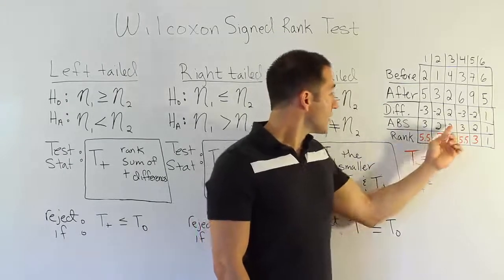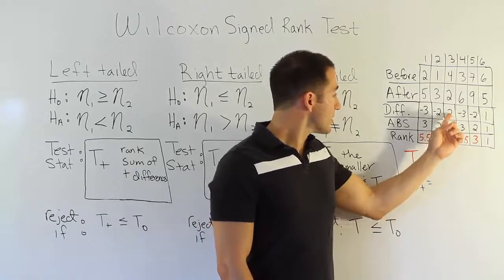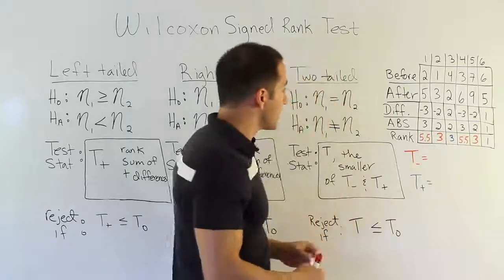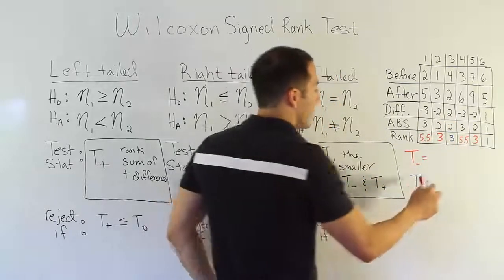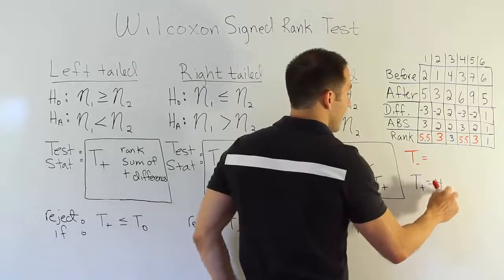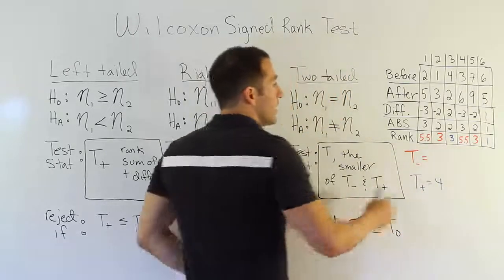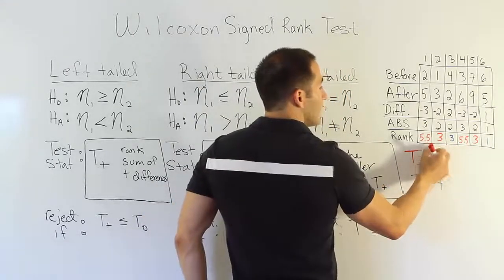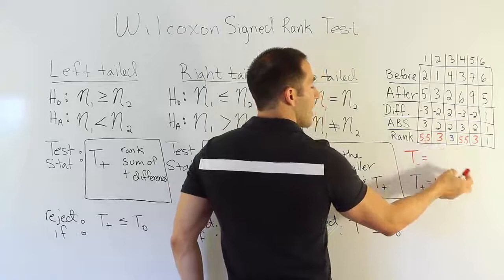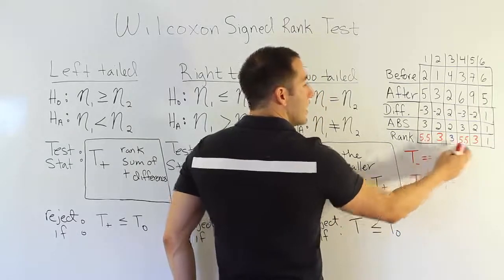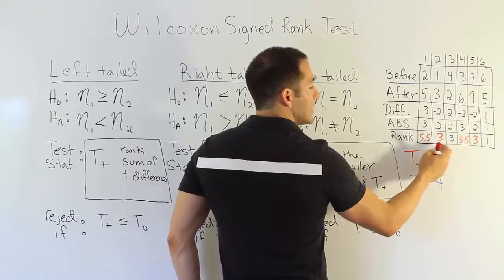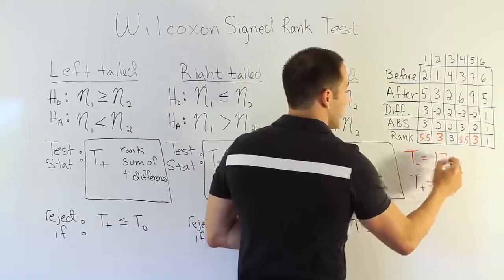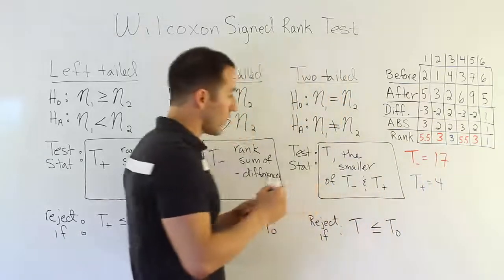I do the same thing for the 3s, which are also tied. They would have gotten ranks 5 and 6, so I gave each one 5.5. Because this 2 was originally a positive, I put it under the blue — the positive total is only 4. The other total: 5.5 plus 5.5 gives you 11, and 11 plus 6 gives you 17. So the negative total here is 17.